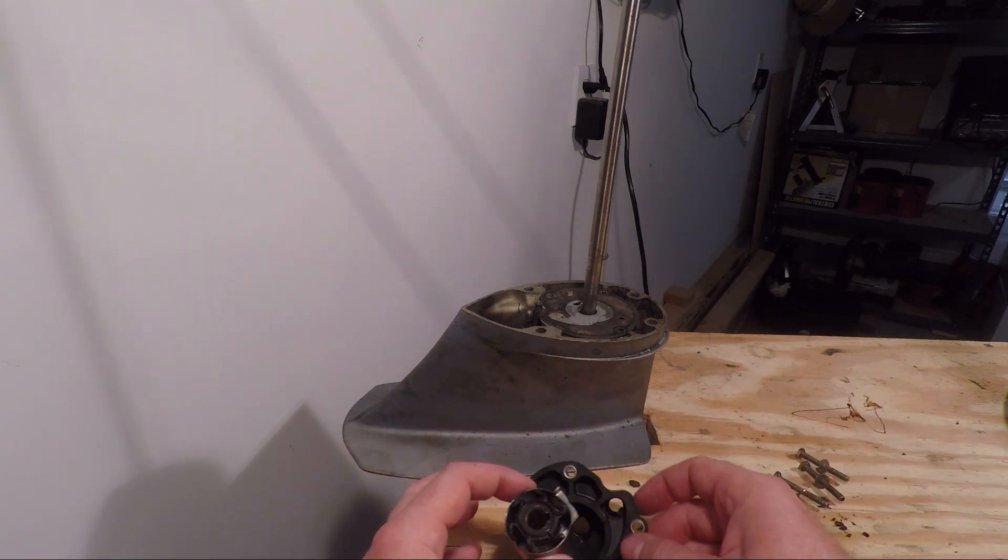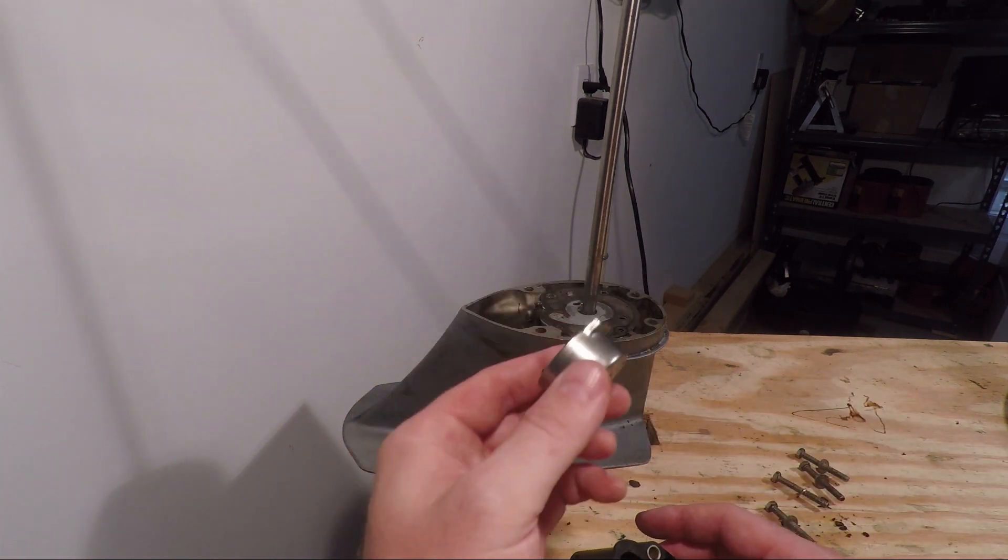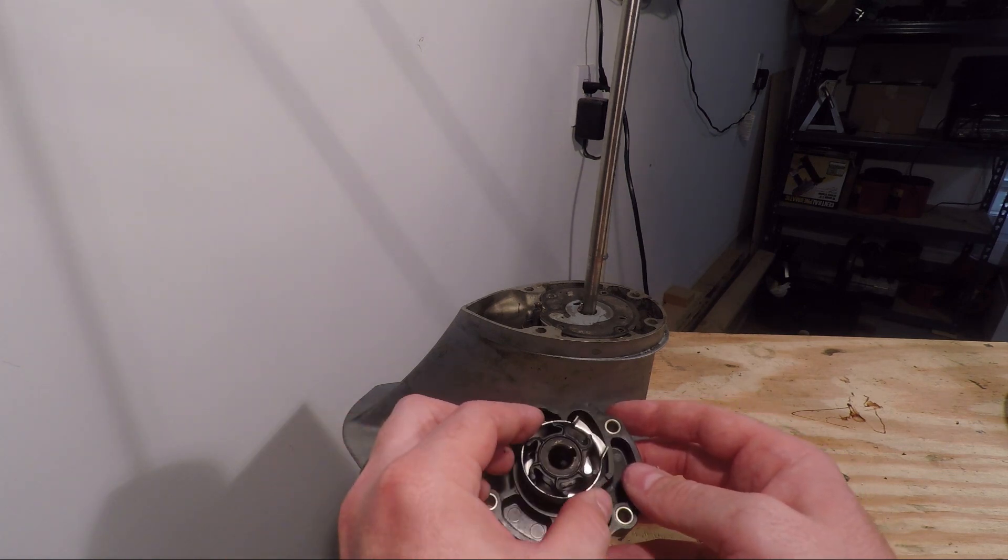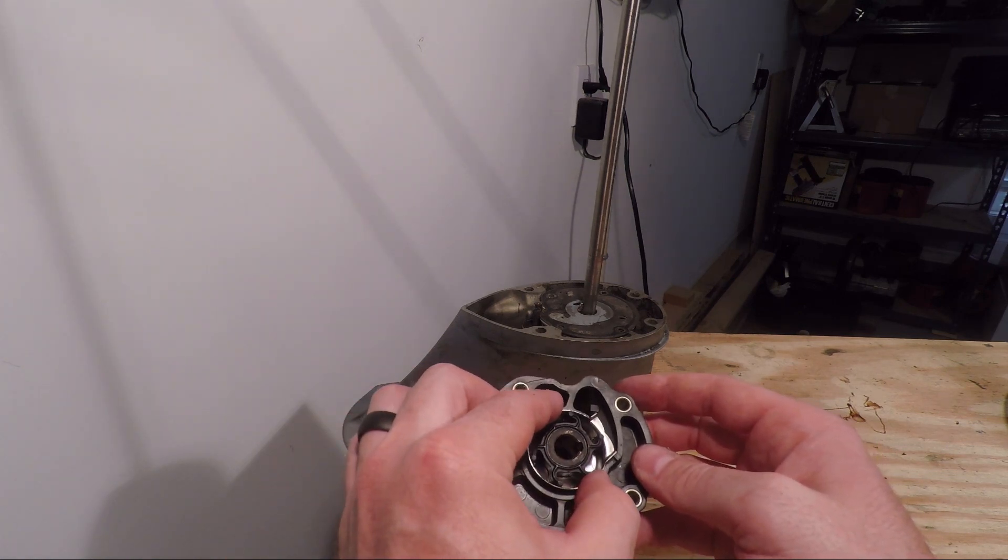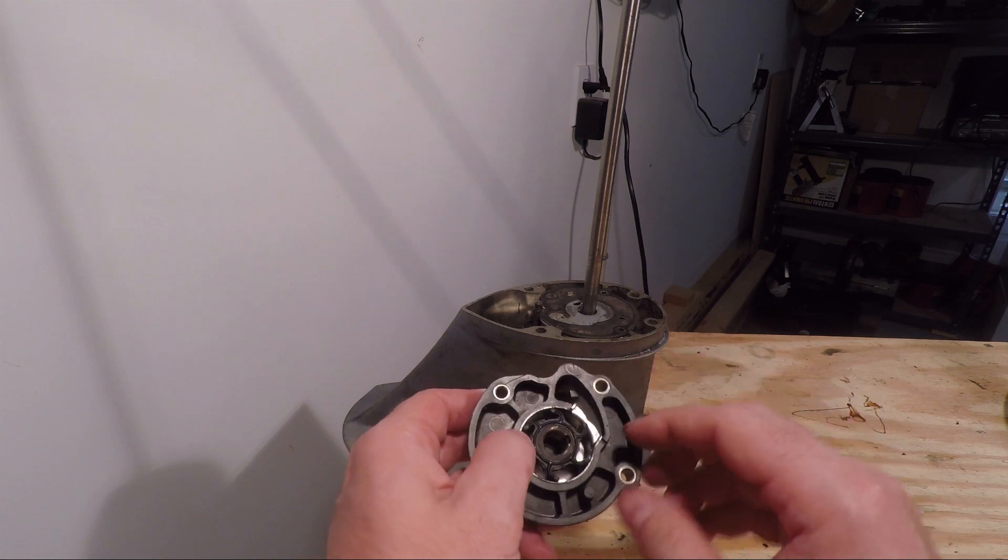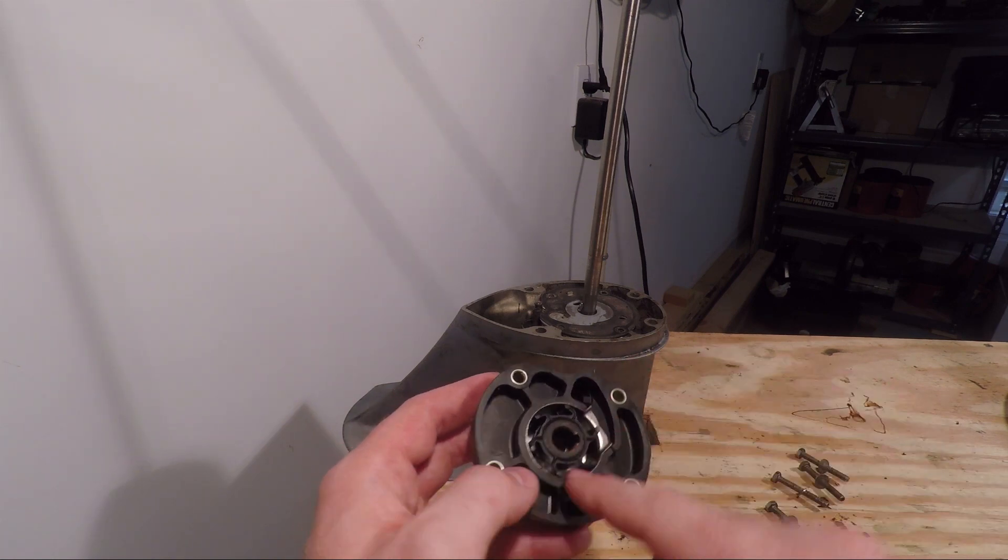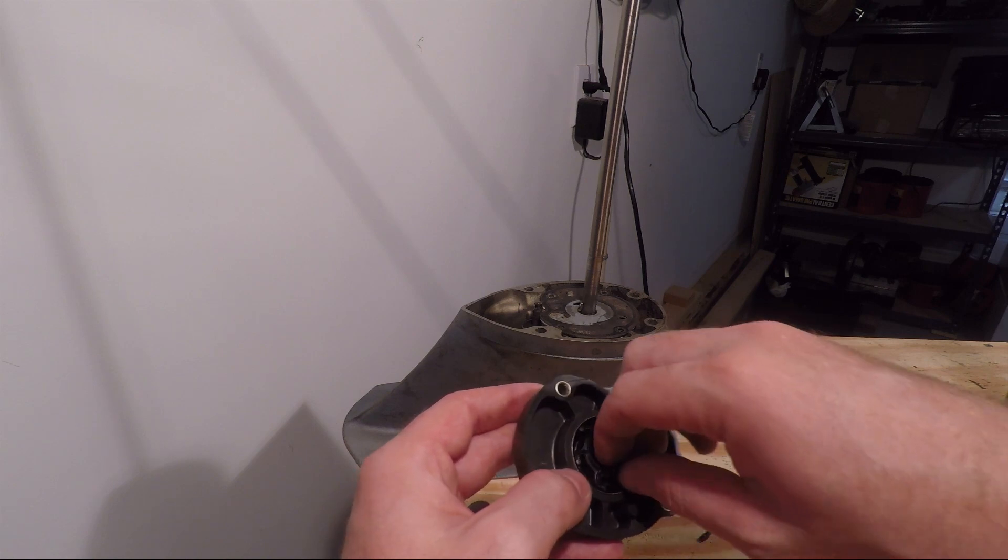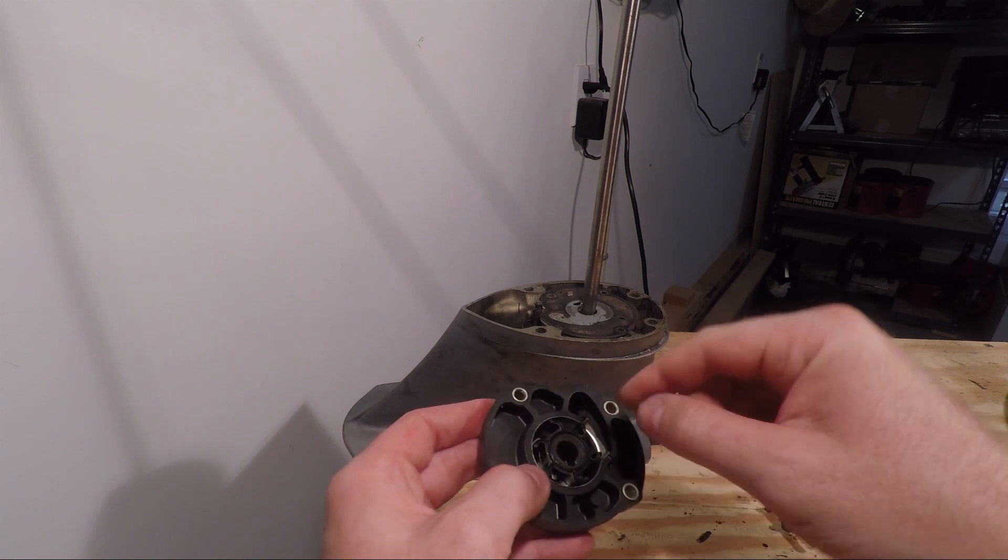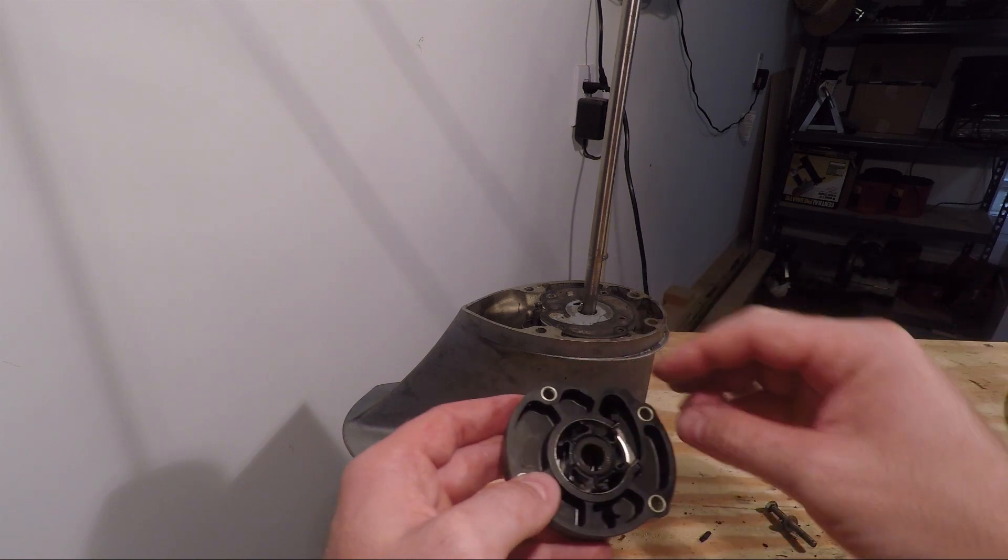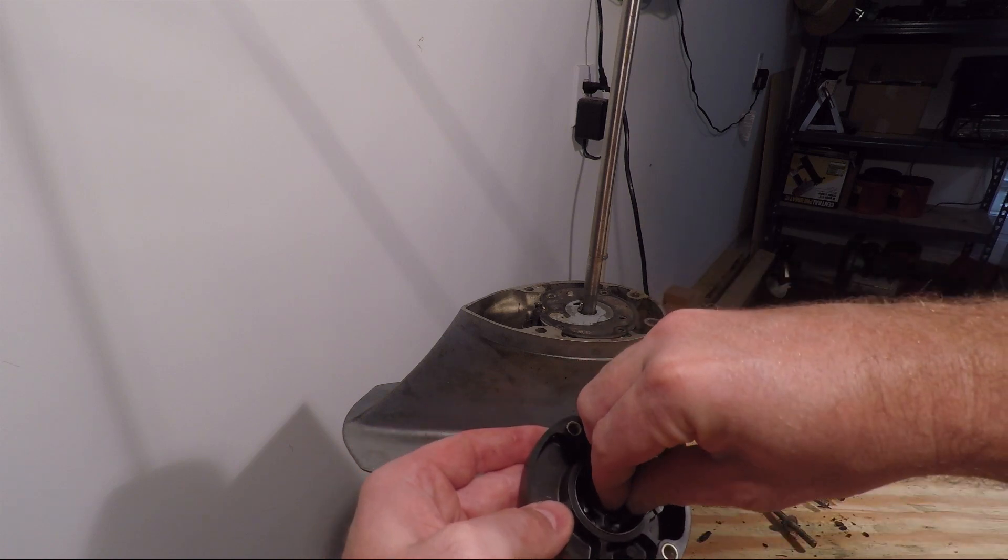Once you have the impeller back in the metal housing, simply slide the metal housing back into the plastic top housing. You can see that the impeller is keyed. I like to move the key to the front of the plastic housing.